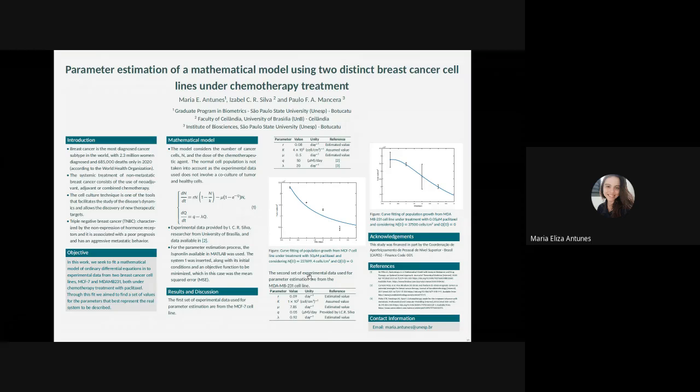The same process was made for the MDAMB231 cell line. Here in table two, we have the values used in estimation process, in addition to the parameter values that were estimated.